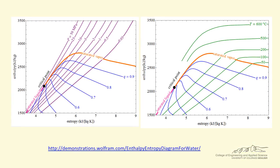Finally, let's look at an enthalpy-entropy diagram. This can be useful in looking at turbine behavior, for example. On the left, isobars are plotted, and on the right, isotherms. An important thing to notice: the critical point is here, and it is not at the highest enthalpy or the highest entropy, because saturated vapor at a given pressure has higher enthalpy and entropy than the saturated liquid it is in equilibrium with. These are brief descriptions of these diagrams, but understanding them really helps to understand single-component phase behavior.